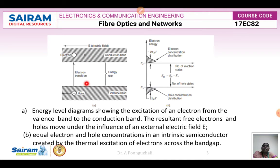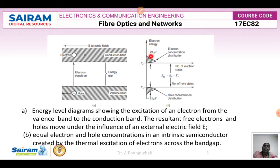The difference between the valence band and the conduction band is called the energy gap. When electrons move from the valence band to the conduction band, holes are present in the valence band — represented by the hole concentration distribution. In the conduction band, more electrons are present, represented by the electron concentration distribution, where the energy is expressed as 2KᵦT, where Kᵦ is the Boltzmann constant and T is the temperature.